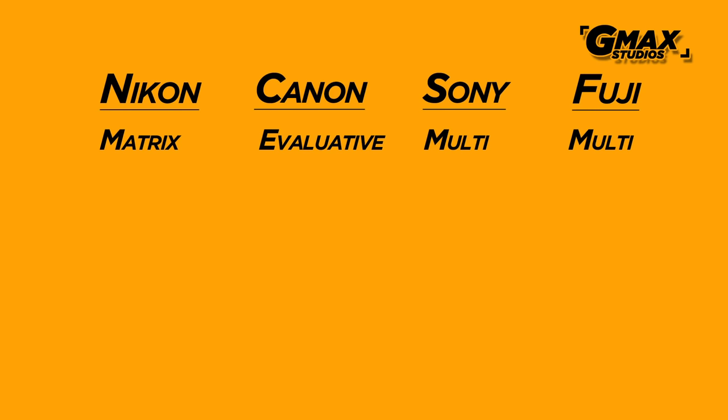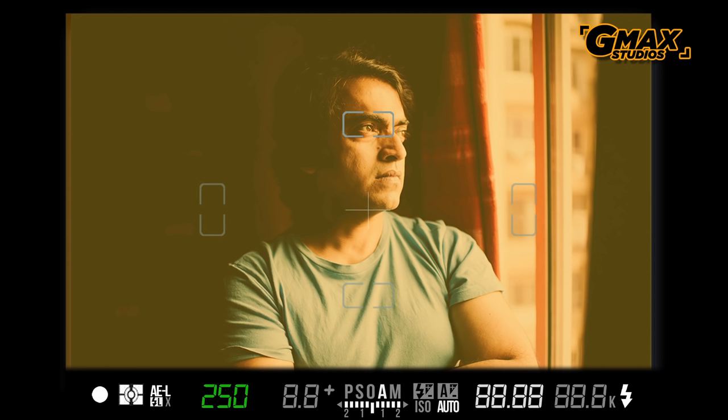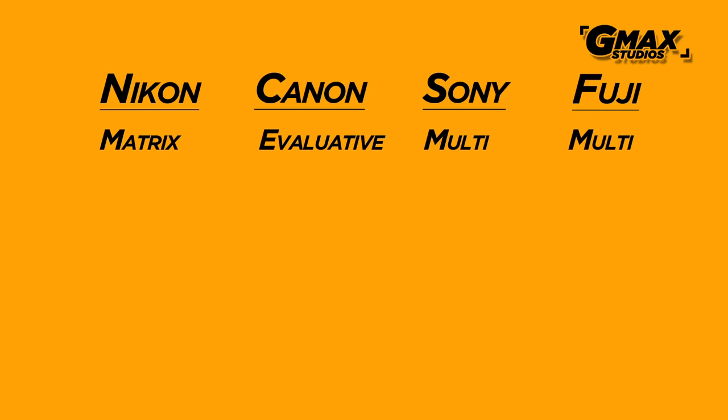This is possibly the most advanced metering mode available on any camera and it is accurate 90% of the time. It is usually denoted by a symbol with a dot in the center and a pattern around it on most cameras. What this metering mode does is take a reading of the entire frame and use a very complex algorithm to determine the exposure. Nikon, for example, says it has a database of 30,000 images against which it compares the frame and then gives you the exposure.